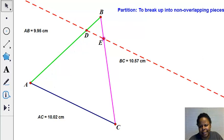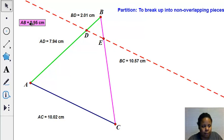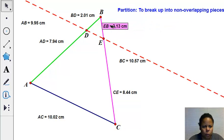So what is the partition of the green side? The partition of the green side is the line segment AD, from A to D, and the line segment DB or BD. If I add these two together, I will get the length of the entire side, which is 9.95. The partition of the purple side of the triangle is broken up into CE, which is 8.4, and EB, which is 2.13. And to add them up together, I get 10.57.